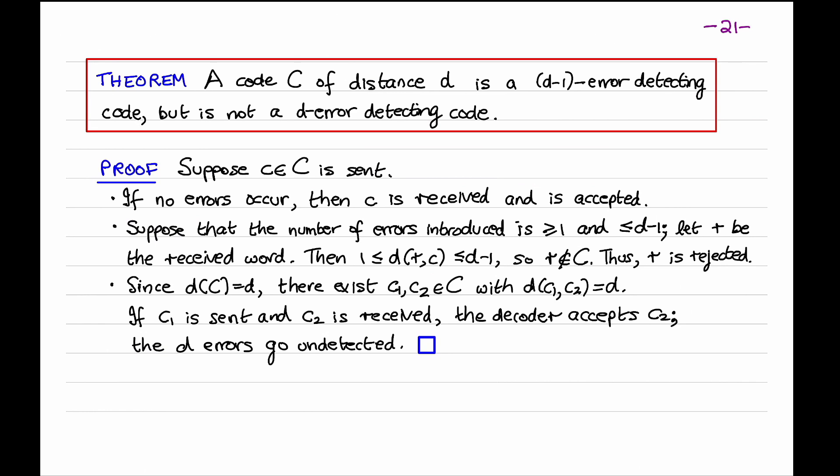Let's now prove the second claim. Since the code has distance D, there exist codewords C1 and C2 whose distance is exactly D. Suppose now that C1 is transmitted and C2 is received. This could occur if C1 is changed in exactly D positions — namely the positions in which C2 and C1 are different — and the channel symbols agree with the corresponding symbols in C2. So the channel decoder will accept C2 as the transmitted codeword, and the D errors go undetected. This shows that C is not a D error-detecting code, and this proves our theorem.